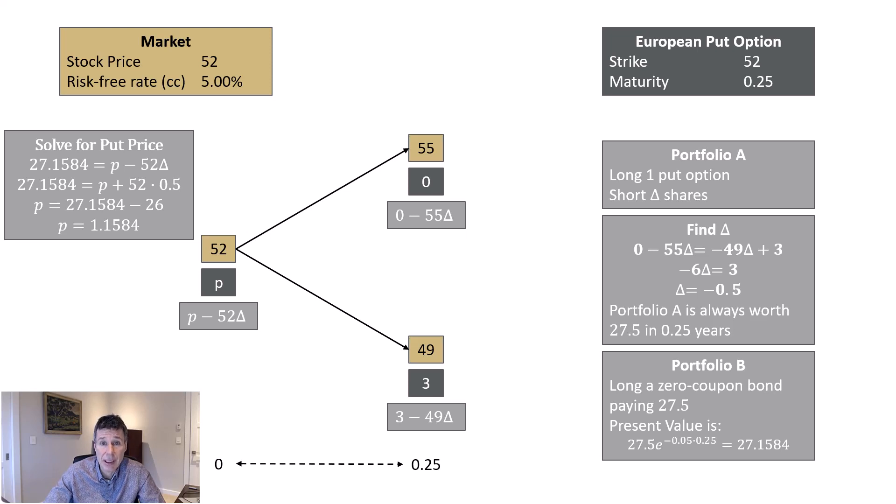Solve for P, P equals 27.1584 minus 26, or P equals 1.1584. So, under this pretty stylized world, we have solved for the value of a European put option using risk-neutral pricing, or risk-neutral portfolios, and found that the price of the put is 1.1584. I hope that's helpful.